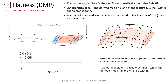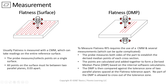Because flatness is on a surface — just like any surface control, think about surface profile — we're not allowed to use the MMC modifier on anything that's just controlling the surface because we don't have a maximum material condition on a surface. Let's take a look at a quick visual on the difference between flatness applied to a surface versus flatness on the DMP.